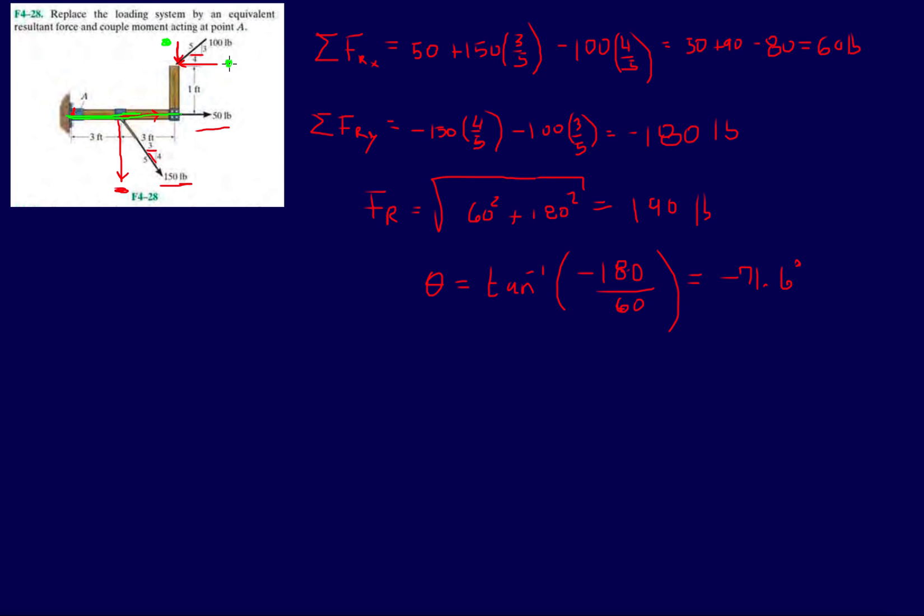The ones that have a green dot next to them are the ones that are going to contribute to rotation about it. Looking at the easy one, this bottom force, we said it was going to be 150 times four-fifths. The distance to move this force over to A is gonna be three feet times three, and it wants to rotate in a clockwise direction.